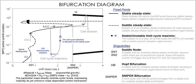Computational neuroscience, also known as theoretical neuroscience or mathematical neuroscience, is the theoretical study of the nervous system.